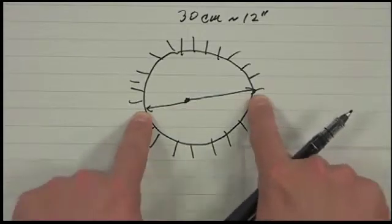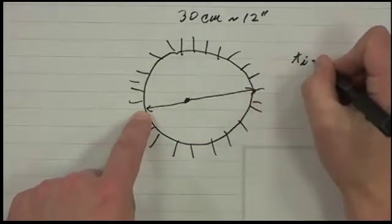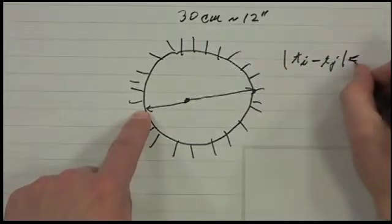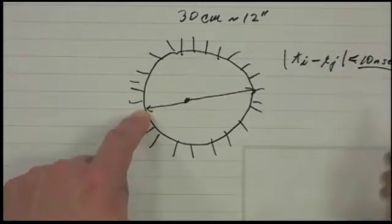So basically, if you have two events that occur, so if ti minus tj is less than say, I don't know, let's make up a number, 10 nanoseconds. I think that's a pretty typical number that we used.